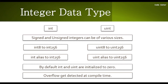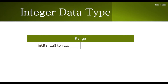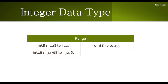Overflow gets detected at compile time. To understand overflow, we need to understand the concept of range. If we write int8, it can hold values from -128 to +127. In the same way, uint8 can hold values from 0 to 255. For int16, the variable holds a corresponding range, and uint16 can hold values from 0 to 65535, which is a large number.